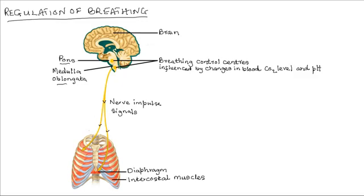Breathing movements normally take place unconsciously. As the carbon dioxide level in the blood reaches the pons and the medulla oblongata, these levels are detected, and when they rise above a certain level, the pons and the medulla oblongata send nerve impulses to the intercostal muscles and the diaphragm, which in turn respond appropriately.